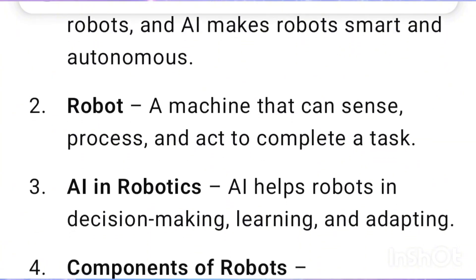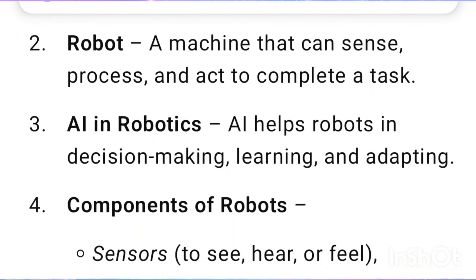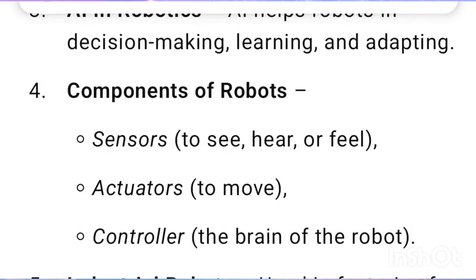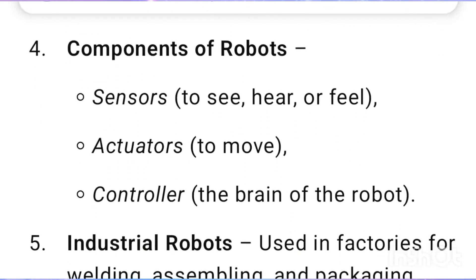A robot is a machine that can sense, process, and act to complete a task. AI in robotics helps robots in decision-making, learning, and adapting. Components of robots include sensors to see, hear, or feel; actuators to move; and a controller — the brain of the robot.